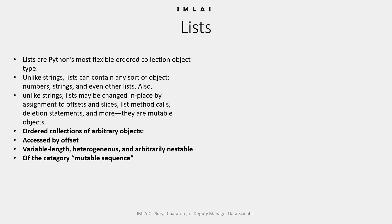The fourth quality is it is a mutable sequence, which we have already discussed. The fifth quality is that a list is nothing but an array of object references. Inherently, a list consists of plenty of objects in it — that is why we call it an array of object references.